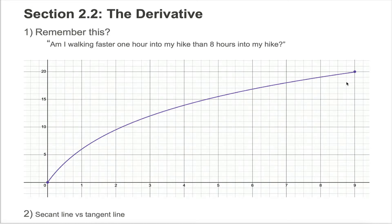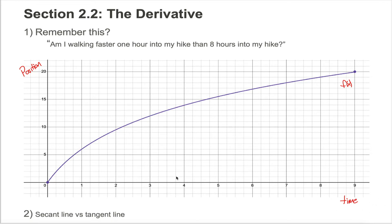I gave you some function and its graph, where the input x variable represented time, and the output f(x) or y variable represented position. The story was that I was going hiking and wanted to track how many miles I had traveled for a given number of hours, the unit on the horizontal axis.